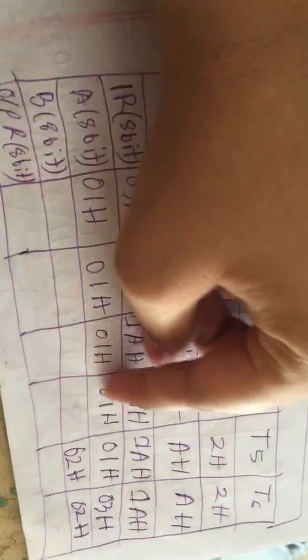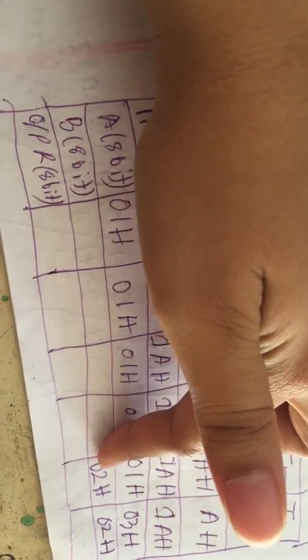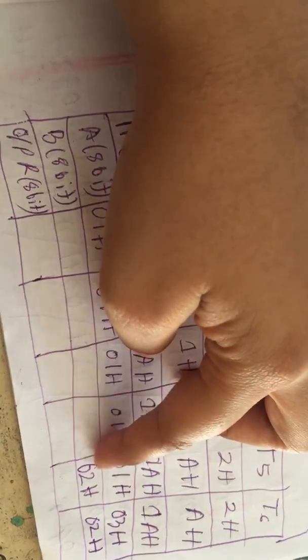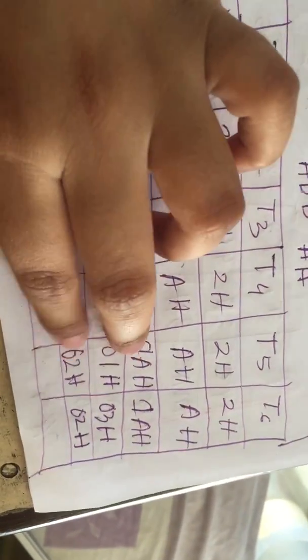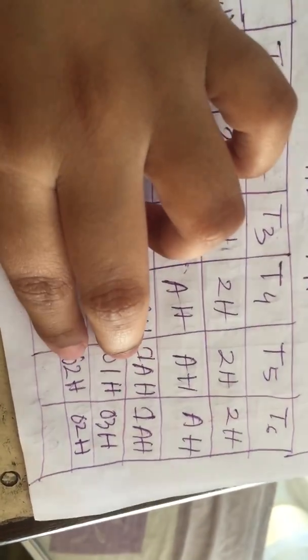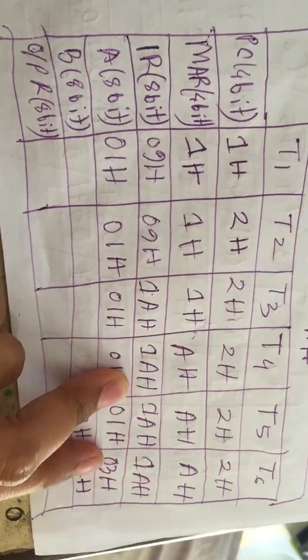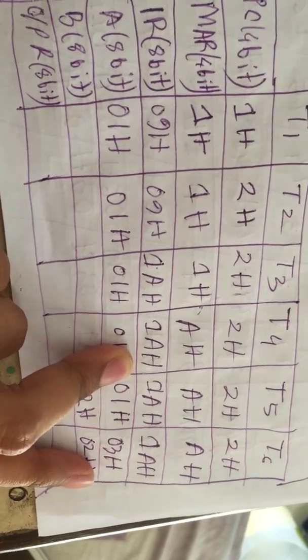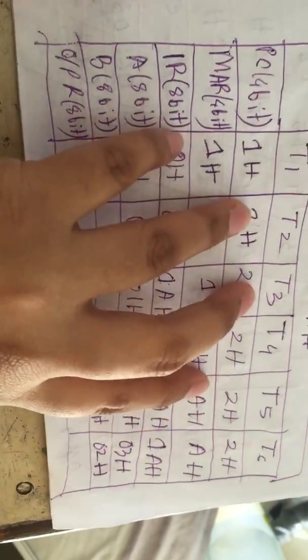This H comes into the MAR for T4. The value of AH — you have to check the source code — is 02H. So 02H goes into the B register. For ADD, it will always go into the B register. Then we add 01H and 02H, giving 03H, and that answer goes to the A register.